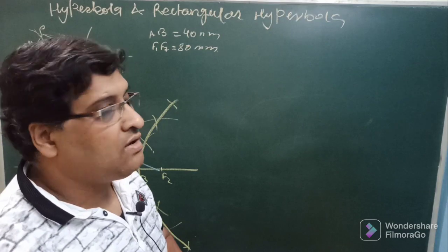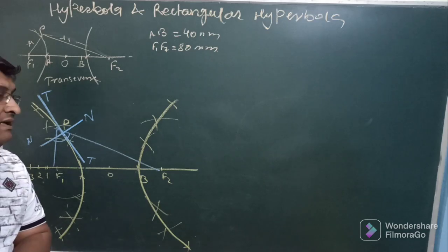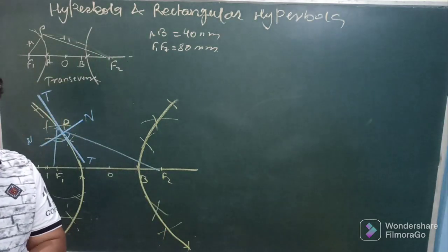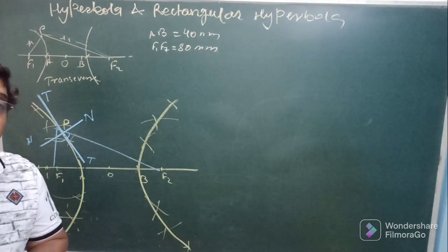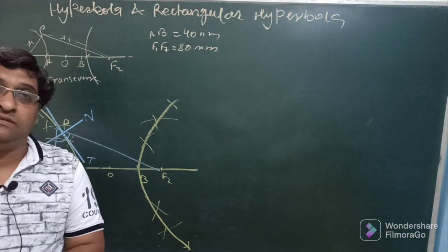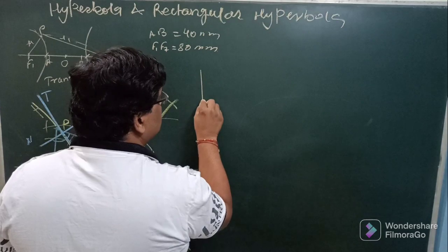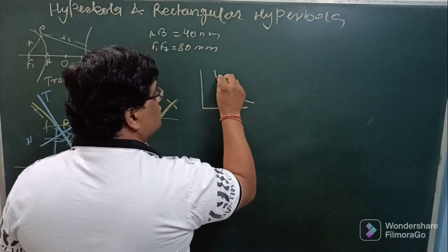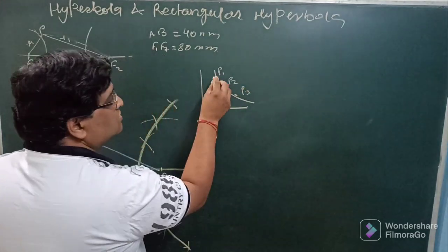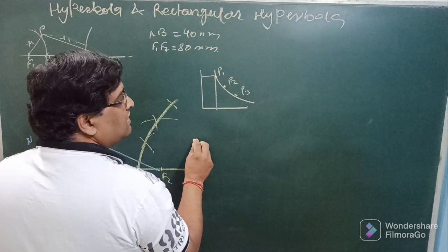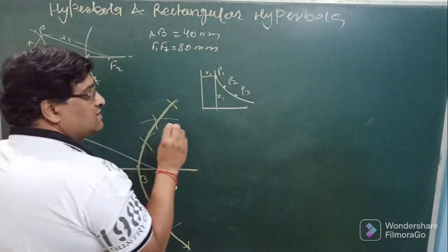Now there is another category of hyperbola that is called rectangular hyperbola where the definition says that the point which is moving in the plane in a rectangular hyperbola it follows a rule that is the product of the distance of this moving point at any instance from two mutually perpendicular lines is always constant.